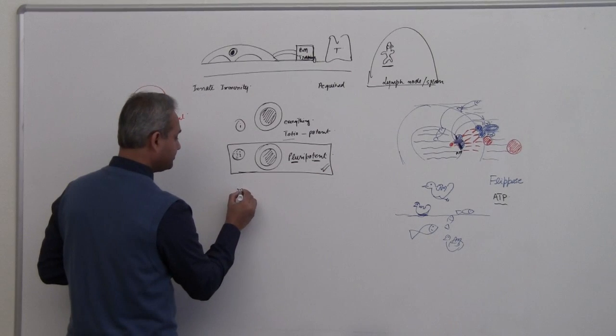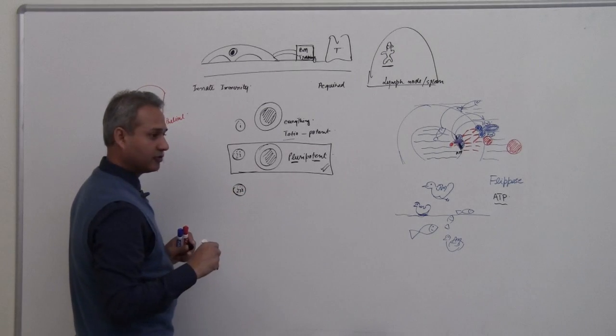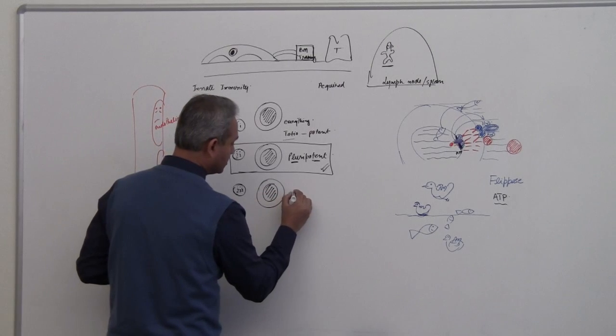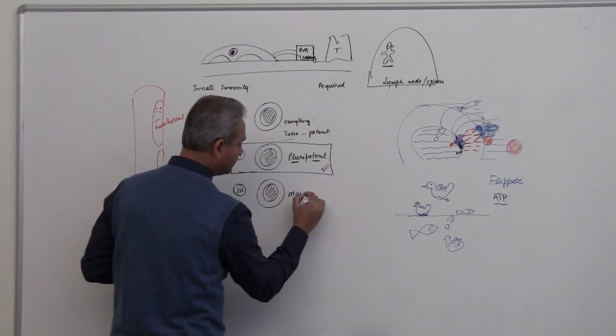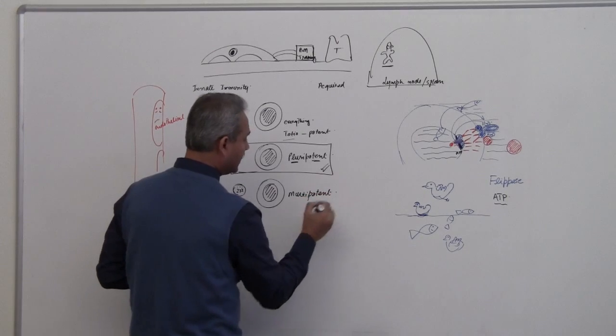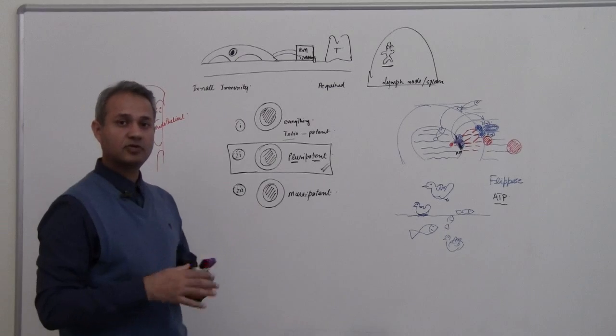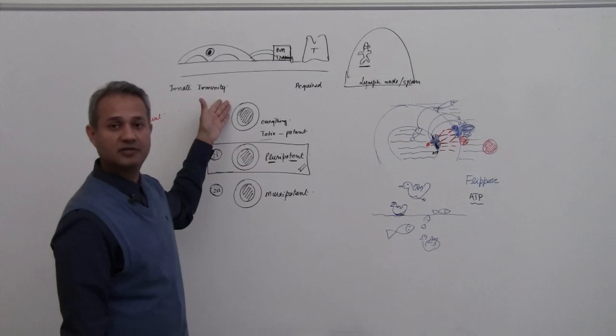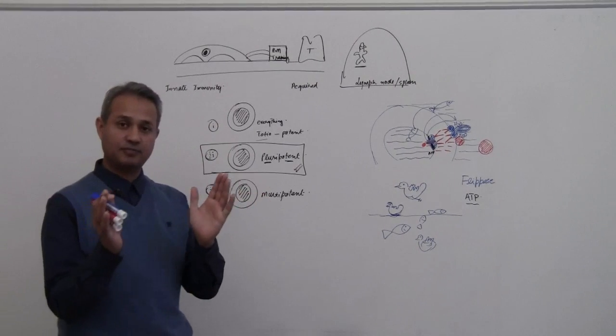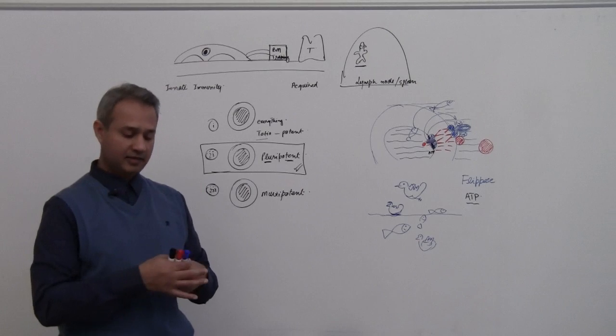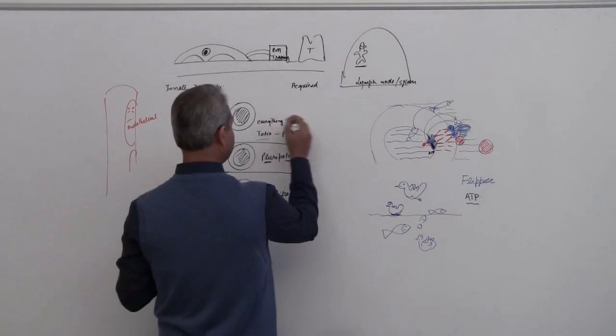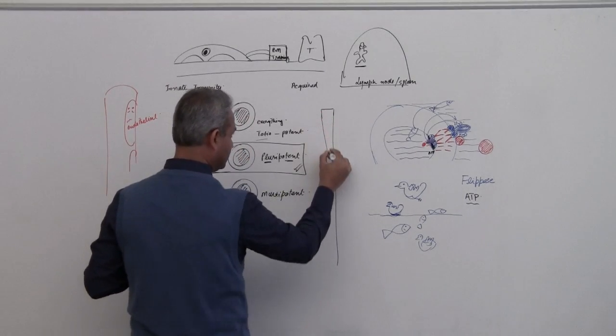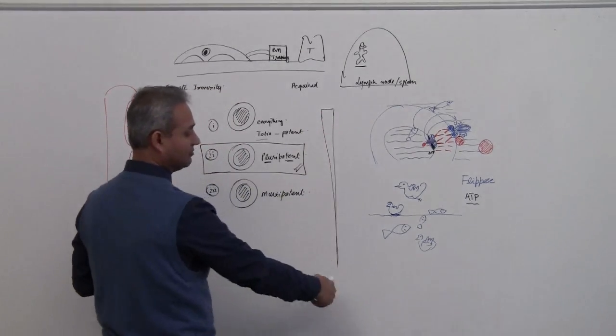After the pluripotent, we have the multipotent stem cell. Here's the thing: as we go down, this has the biggest potency, and as we keep going down, the potency keeps reducing. If this guy has a potency this big, then as we keep going down the scale, you would see the potency keeps reducing.